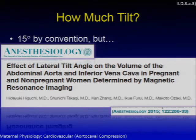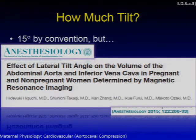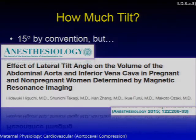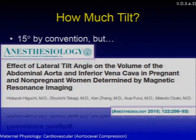How much tilt is needed to prevent this? By convention, historically, all textbooks say 15 degrees at the very least. But there are interesting results from an MRI study by Higuchi and colleagues comparing various tilts in pregnant versus non-pregnant women at 15, 30, and 45 degrees. They showed that there is really no relief of aortic caval compression by MRI until at least 30 to 45 degrees of tilt, and none of the women in any group had symptoms associated with the supine position.